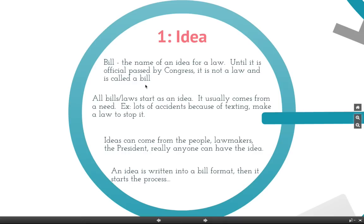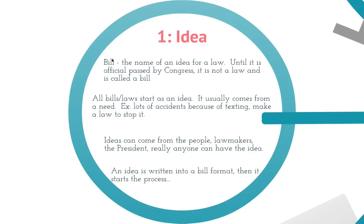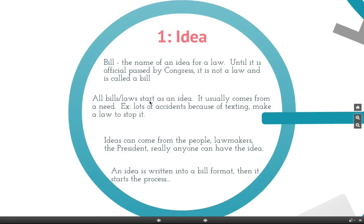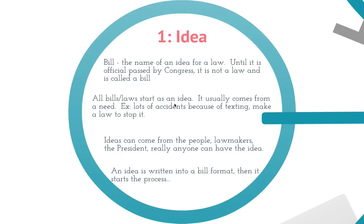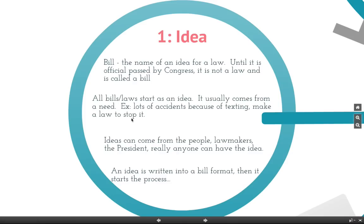Let's talk about some vocab. The word we want to talk about is bill — this is the name of an idea for a law. When we're talking about a law that hasn't been approved yet, we refer to it as a bill. Bills get numbers when they go to Congress, so every bill has its own number. Until a law is officially passed by Congress, it's called a bill. All bills start as an idea; it usually comes from a need. For example, a big issue in the news is texting while driving causing accidents, so they made a law making texting while driving illegal.